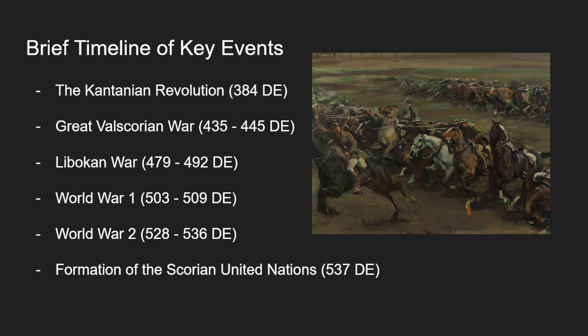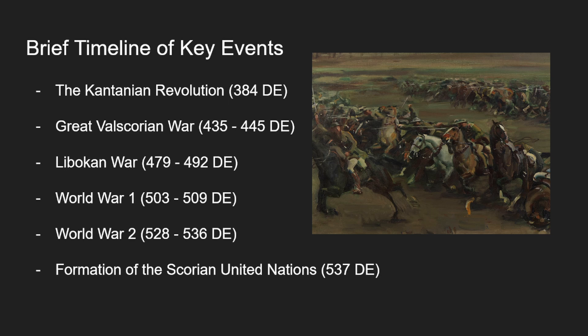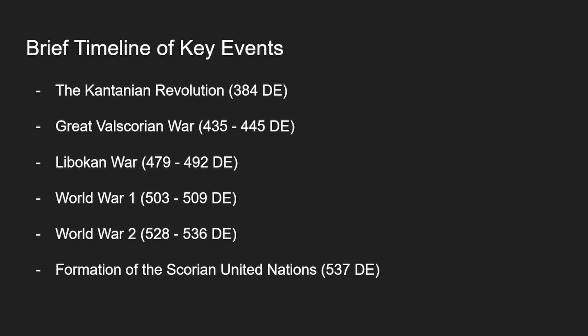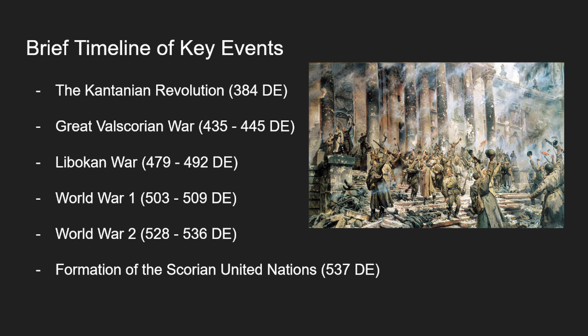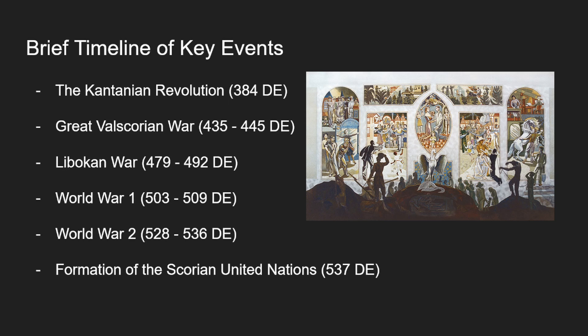World War I was a conflict across the world, but primarily concerning itself with larger theaters in Talmere and Valscoria, and this saw the end of the Second Valach Empire. World War II saw the rise of the Pact of Steel, which was a large totalist coalition of countries — a very brutal war — and this saw the further reinforcement of the Big Five and its ranks and strength. When we talk more about World War II, we'll further define who the Pact of Steel was. And as discussed, the formation of the Scoria United Nations came afterward.